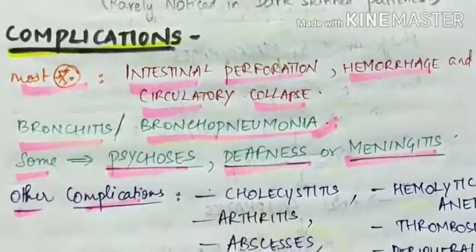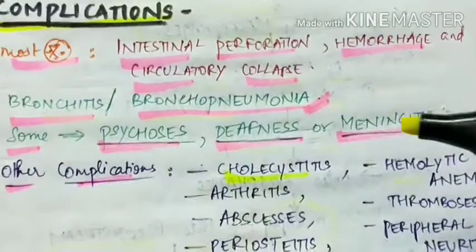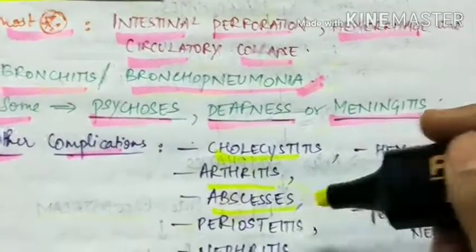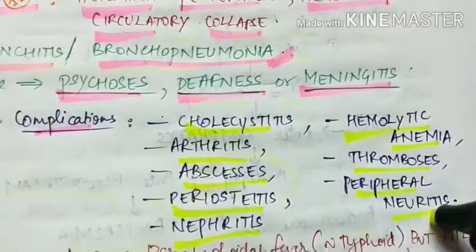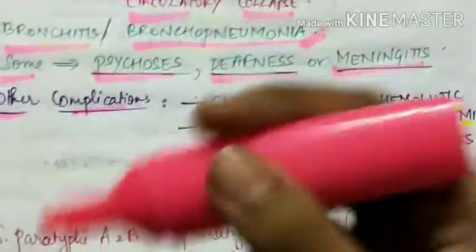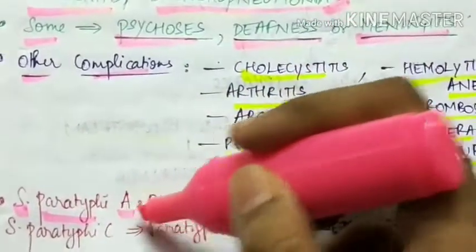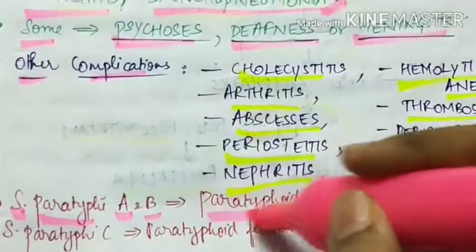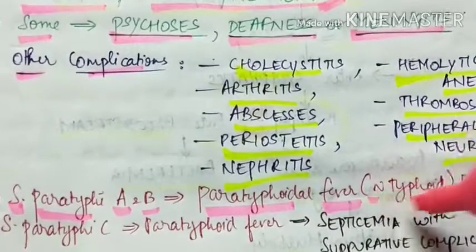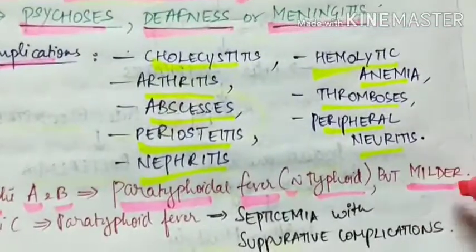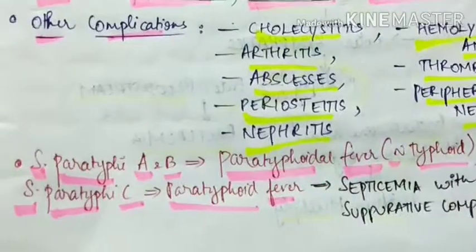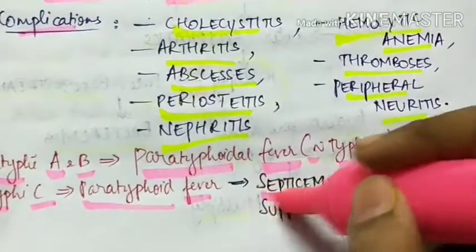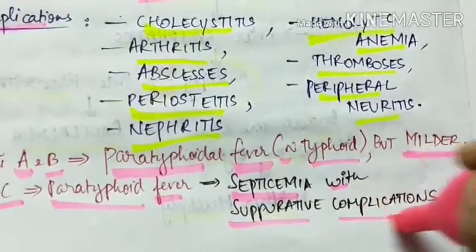Other complications include cholecystitis, arthritis, abscesses, periosteitis, nephritis, hemolytic anemia, thrombosis, and peripheral neuritis. Salmonella paratyphi A and B cause paratyphoid fever, which is similar to typhoid but milder. Whereas Salmonella paratyphi C causes a very severe form of paratyphoid fever with septicemia and chronic carriers.